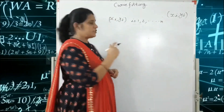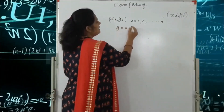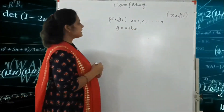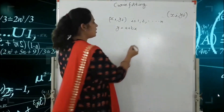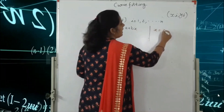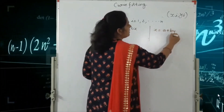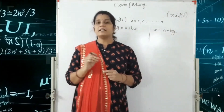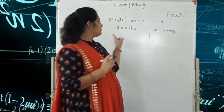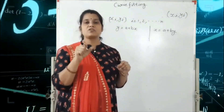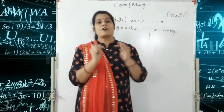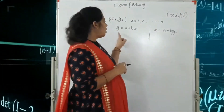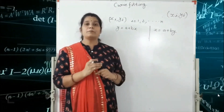Our Straight Line Equation is Y is equal to A plus BX. Another Straight Line Equation is X is equal to A plus BY. Both equations are Straight Line Equations. But if we are not given which equation to use for solving the question, for finding the Straight Line Equation, then we always use Y is equal to A plus BX.